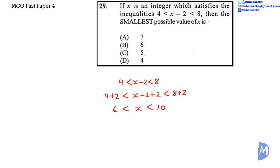X is greater than 6, but less than 10. X is an integer, so the possible values of X are 7, 8, and 9. Thus, the smallest possible value of X is 7. The answer is A.